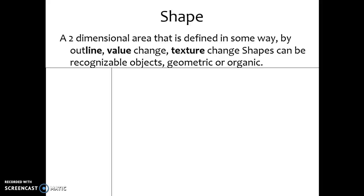A shape is a two-dimensional area that is defined in some way. This means that we know where the edges are of this area based on either an outline, a change in value, or a change in color.